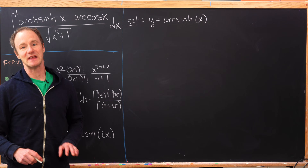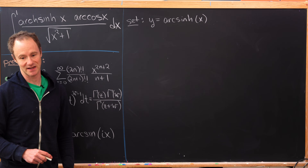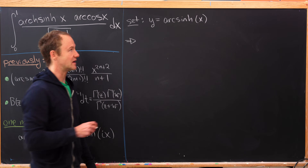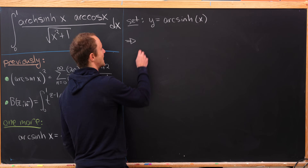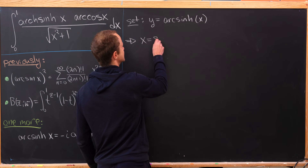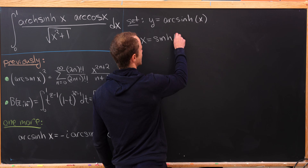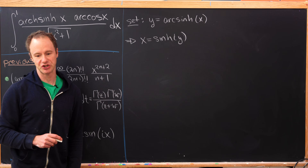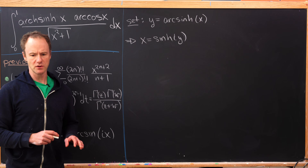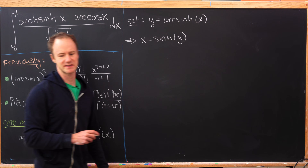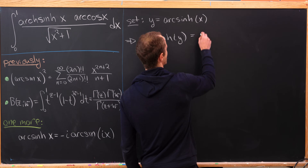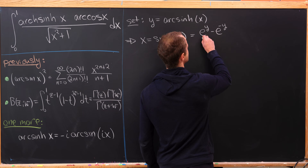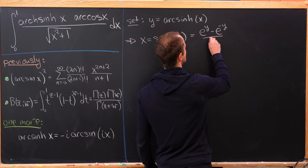By the function-inverse function relationship, x is equal to the hyperbolic sine of y. Let's recall what the hyperbolic sine is: it's e to the y minus e to the minus y, all over 2.